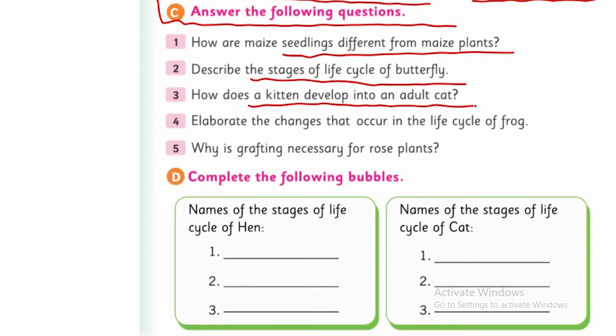Question three: How does a kitten develop into adult cat? Question four: Elaborate the changes that occur in the life cycle of frog. You need to answer based on the life cycles you studied. These are very easy questions. Question five: Why is grafting necessary for rose? We can grow rose from seed, but why is grafting more suitable and necessary? Why do we choose grafting instead of seed germination for rose?